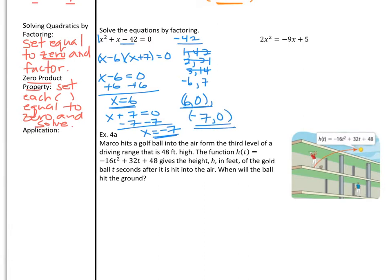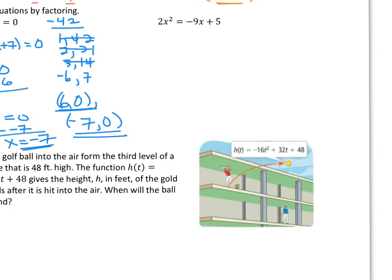Make sure you watch your directions on Savas, whether they want you to type it in as an integer, which would just be 6, or as an ordered pair, which would be 6 comma 0. For the next example, 2x squared equals negative 9x plus 5. The first thing to do is set the equation equal to 0 and factor. We'll keep 2x squared on the left so the lead coefficient is positive, then add 9x to both sides and subtract 5. This gives us 2x squared plus 9x minus 5 equals 0.